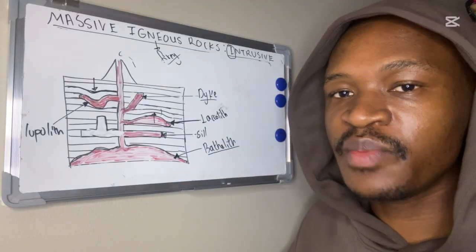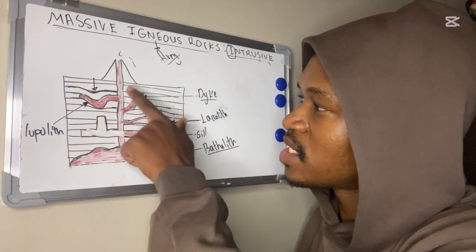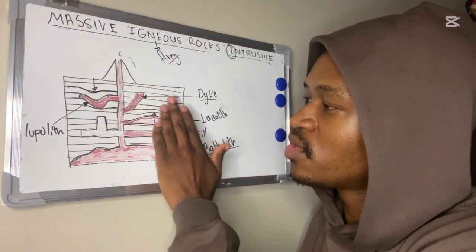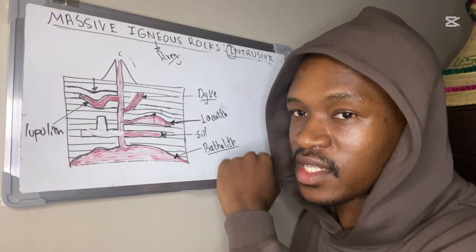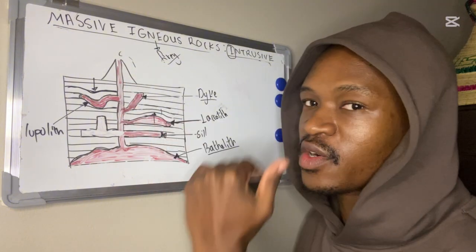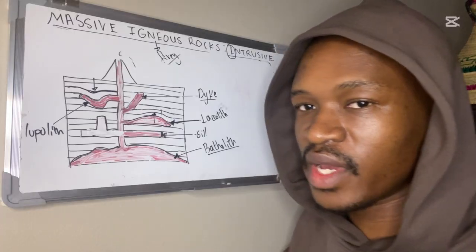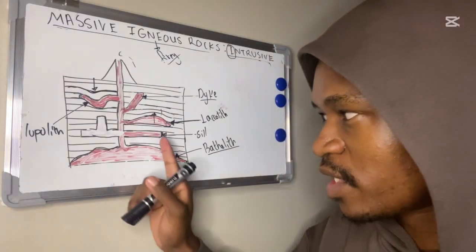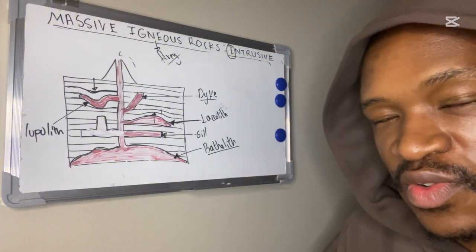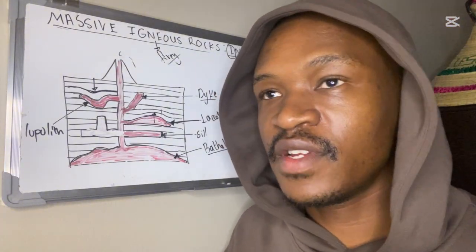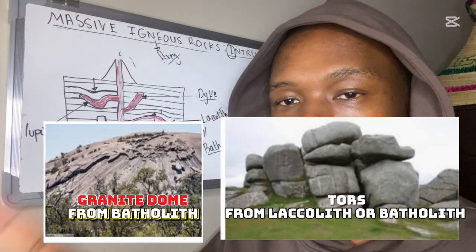Over time, over millions of years, these sedimentary rocks are going to erode away, and then these intrusive landforms are going to be exposed to the surface. When the overlying rocks are eroded away, these parts are exposed to form our massive igneous rocks. In Grade 11, we are going to deal with two of them: our granite dome and tors.